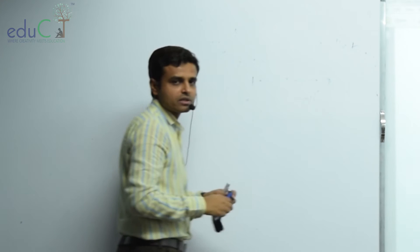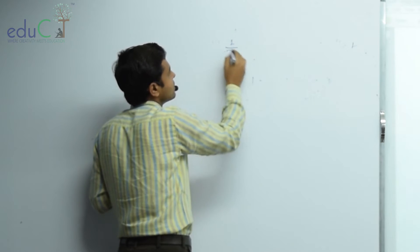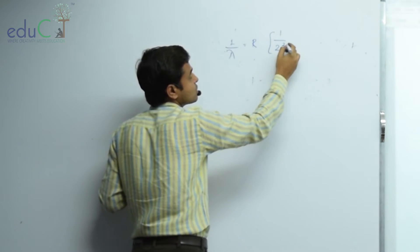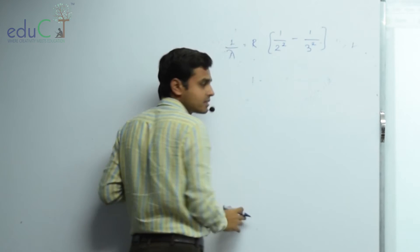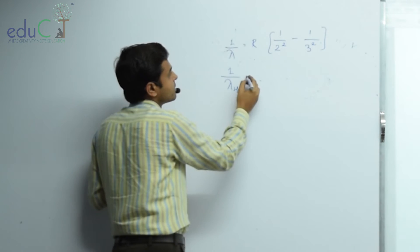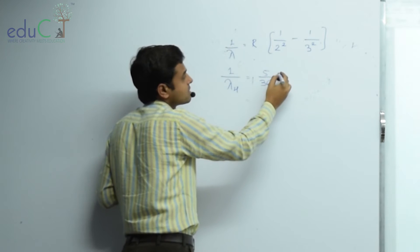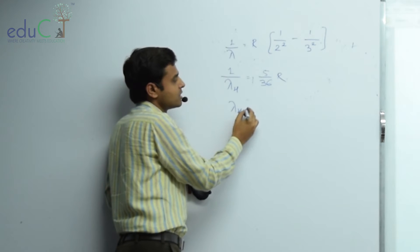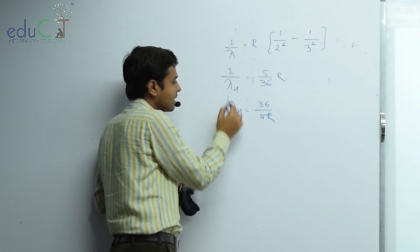Hydrogen is very simple — you have a clear idea. 1 upon lambda is equal to R times (1 upon 2 squared minus 1 upon 3 squared). So lambda H is 5 by 36R, and therefore lambda H equals 36 by 5R.